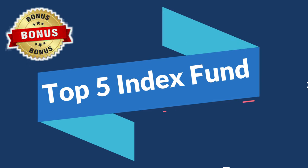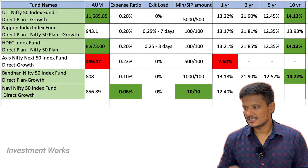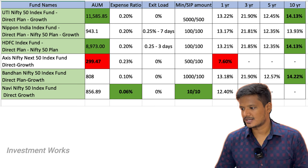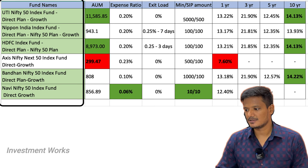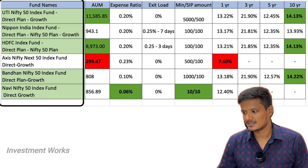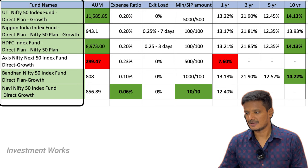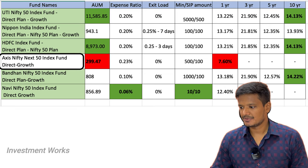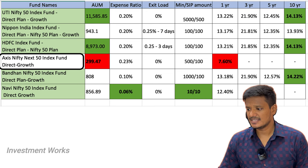Now let's look at the bonus information — the top 5 index funds. Let's analyze them completely. On the screen, you will see the top 5 index funds. The first one is UTI, second is Nippon, third is HDFC, fourth is Bandhan, and fifth is Navi. You can see there is a single index fund comparison here.